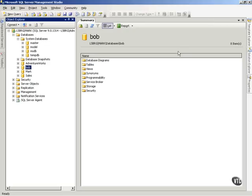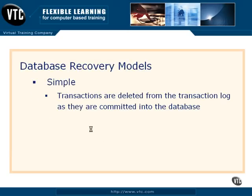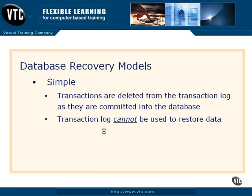Let's talk about the various models and how they're going to affect you. The first is the Simple Recovery Model. In this model, transactions get deleted from the transaction log when they're committed into the database. Transactions get written into the log, and as soon as a commit happens and that gets written into the database, they disappear from the transaction log. That means the transaction log cannot be used to restore our data — we can't do point-in-time restores. This is not acceptable for most production environments because large databases take too long to backup and restore that way.